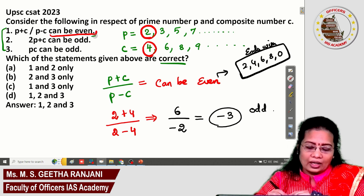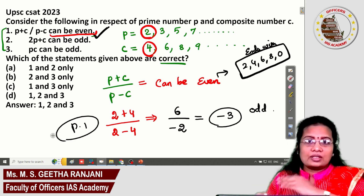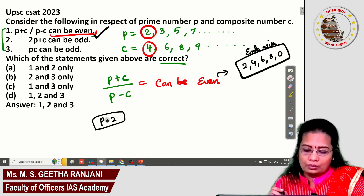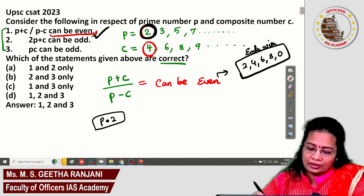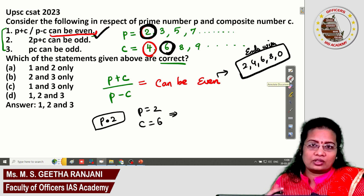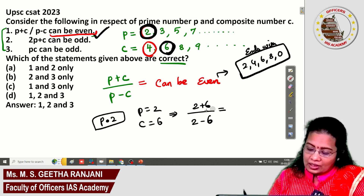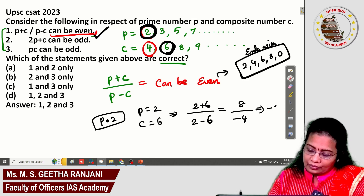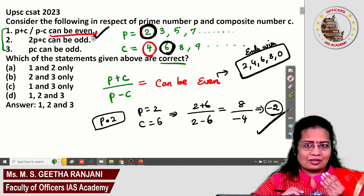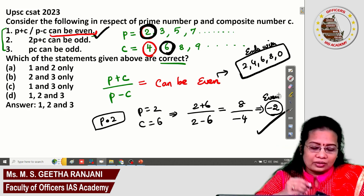For possibility 2, take P = 2 and C = 6: (2 + 6) / (2 − 6) = 8 / −4 = −2. This result is an even number. Since at least one possibility gives an even result, statement 1 is correct.